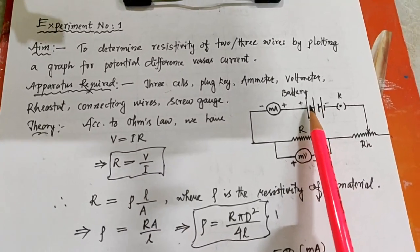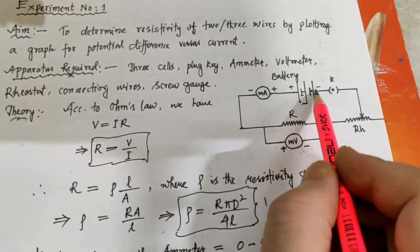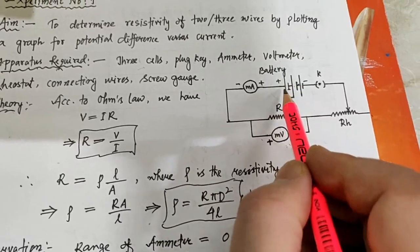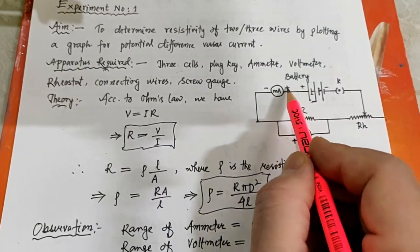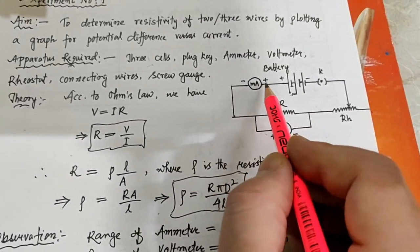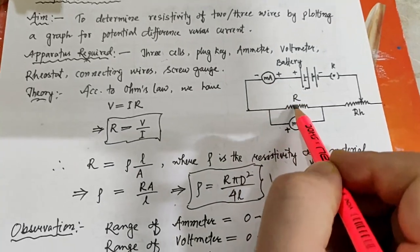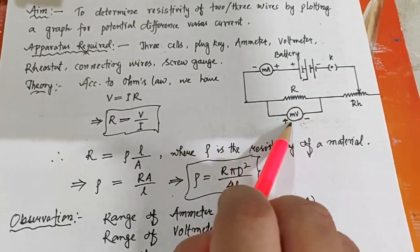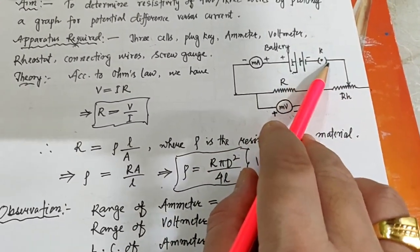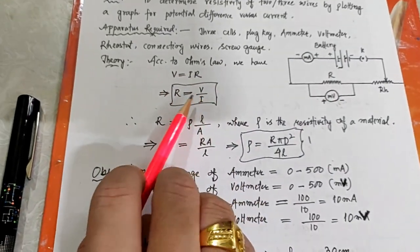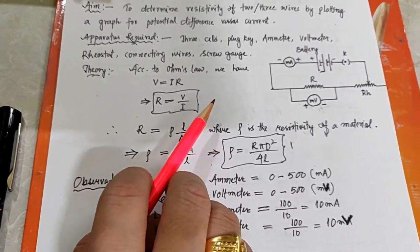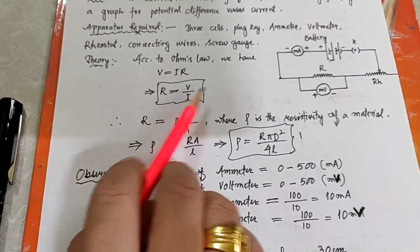In the circuit there are three cells. From the positive terminal, connect to the positive terminal of the ammeter. This is the resistance wire to be measured. The voltmeter is always connected in parallel. This is the rheostat and this is the key. According to Ohm's law, V equals IR, and R equals V upon I. From the readings of current and voltage, we can find out the resistance of the particular wire.